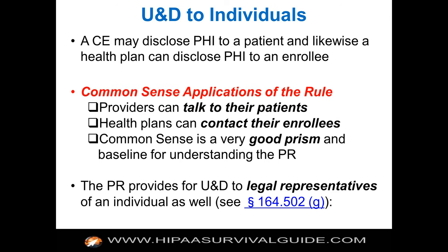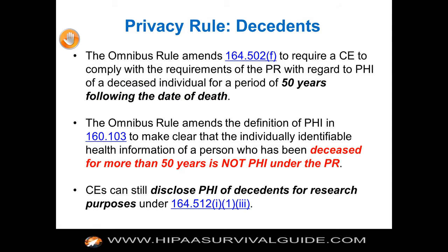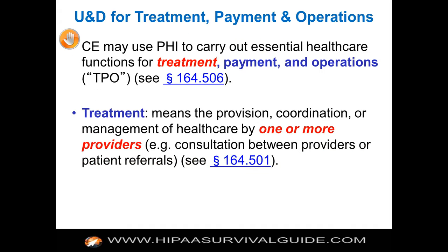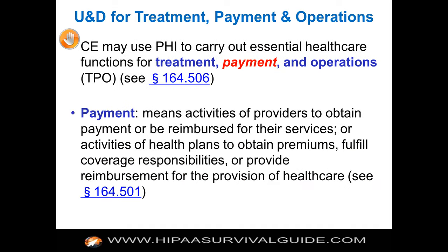You're going to have to have local counsel tell you in each state in which you operate who may or may not be a legal representative. The omnibus rule amended 164.502F — death plus 50 is no longer PHI — but CEs can still disclose PHI for research purposes, so that wasn't eliminated. This is the treatment, payment, and operation exception in Section 506.